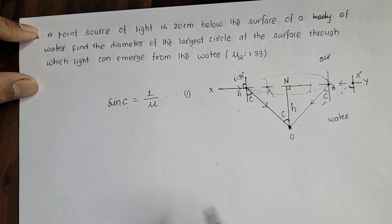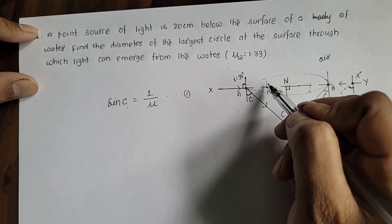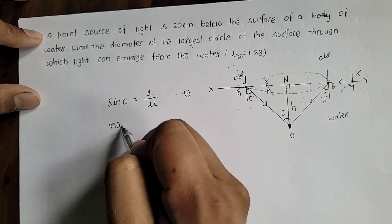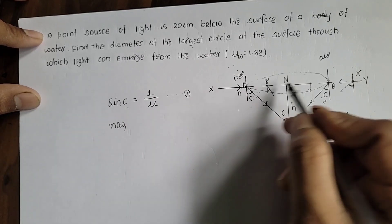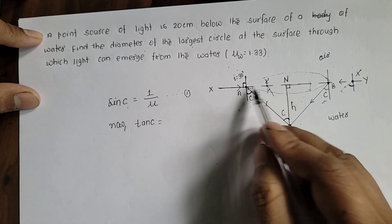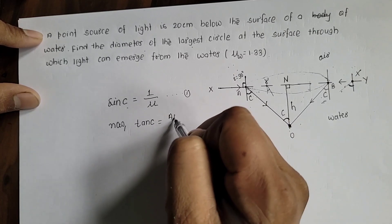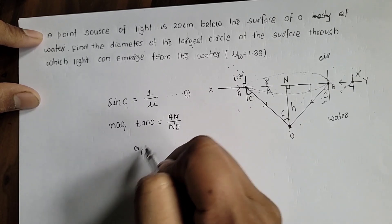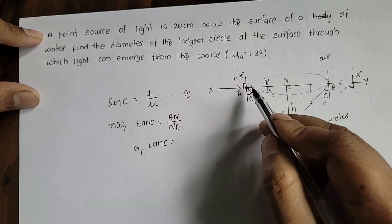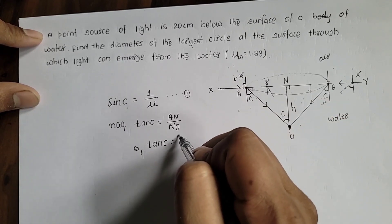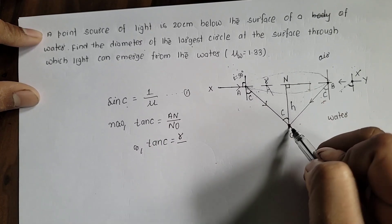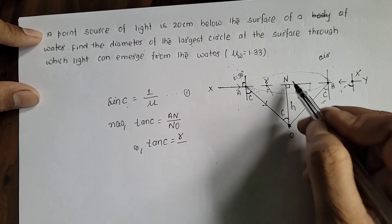The circle illuminated on the surface has radius r. In triangle ANO, tan C equals AN divided by NO, where AN is the radius of the circle r, and NO is the depth of point O from the water surface h. So tan C = r/h.